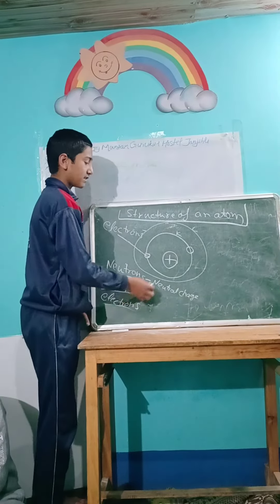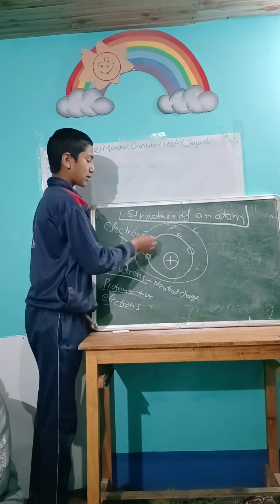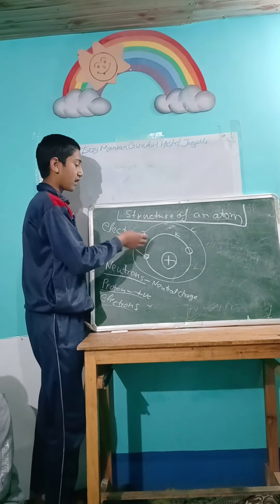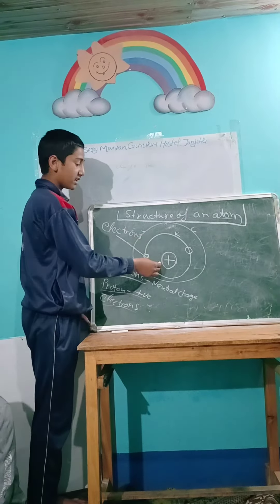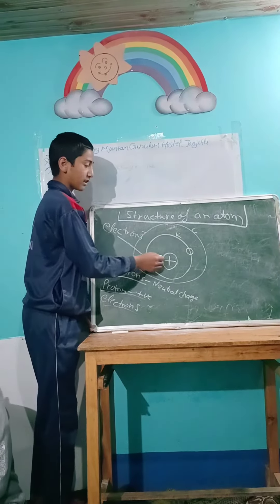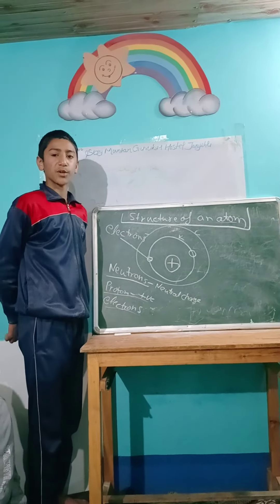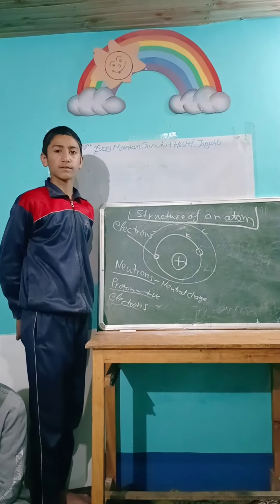Dear friends, these are the orbits. Similarly to how the planets move around the sun, the electrons move around the nucleus. Thank you dear friends for your kind attention. May you live well.